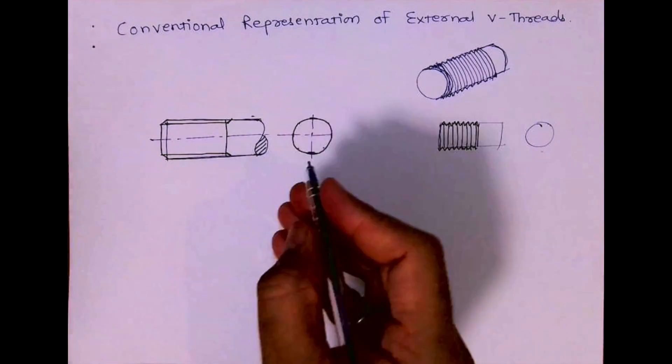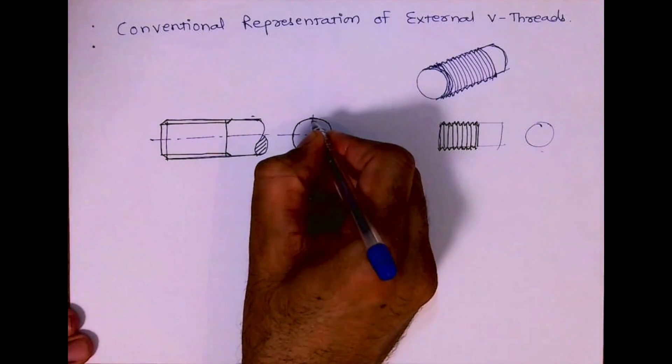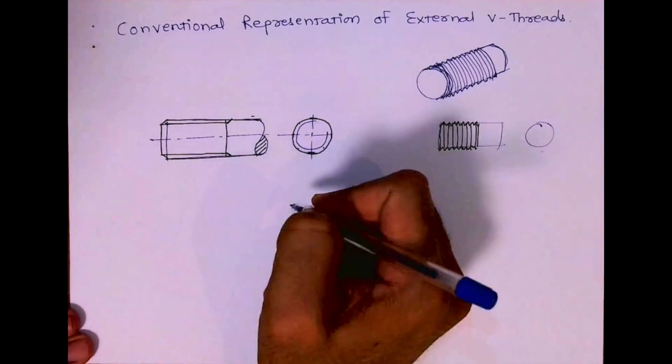We'll see the side view. When you see the side view, we need to draw a three-fourth circle. Remember that this is a convention.